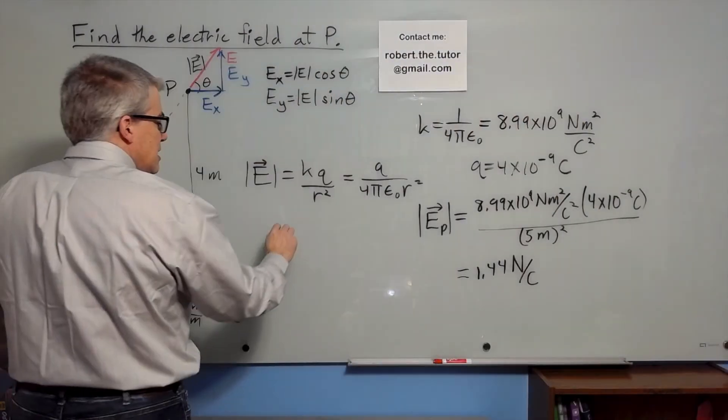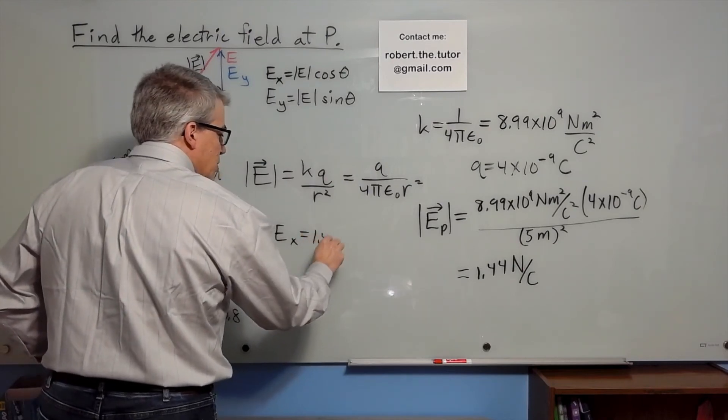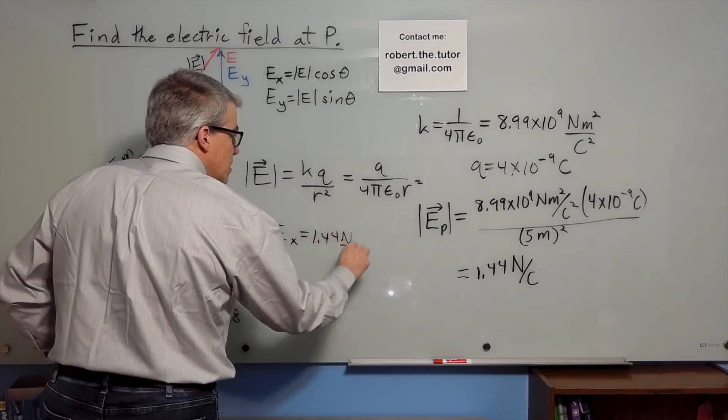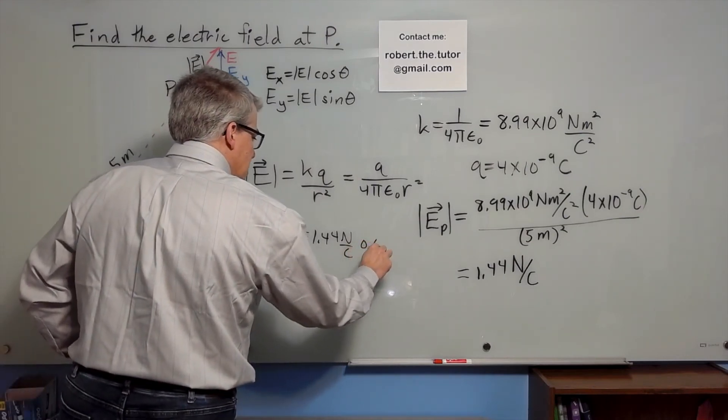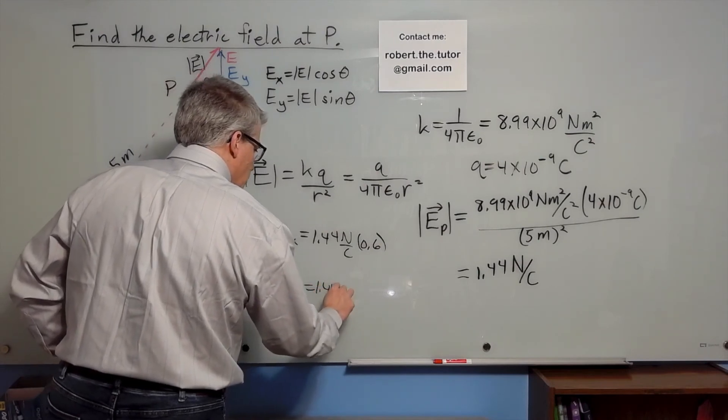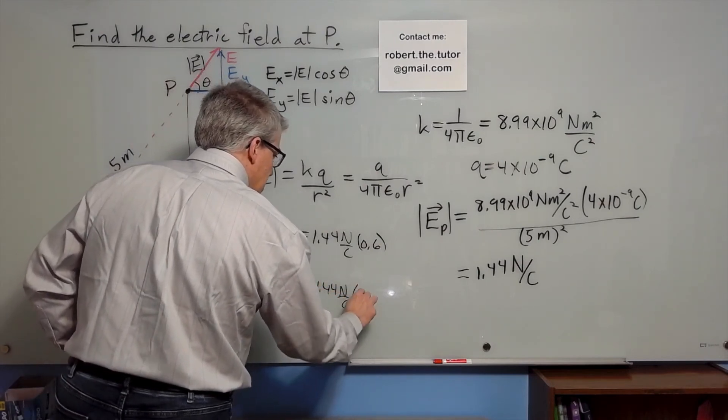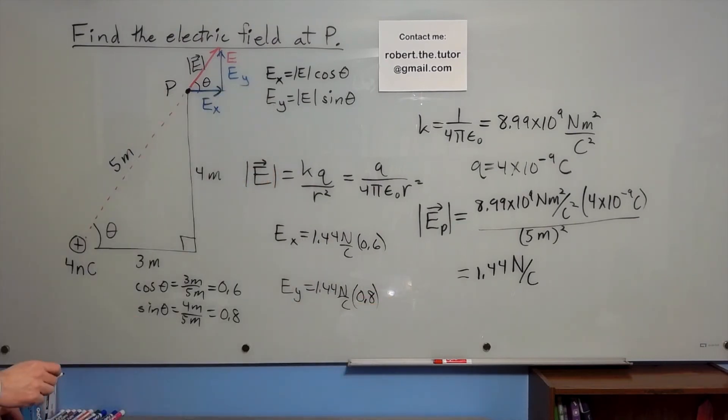So the components E x would actually be 1.44 newton per coulomb times the cosine of theta, which is 0.6. And electric field y would be 1.44 newtons per coulomb times 0.8, which is the sine of theta. And that gives us our components.